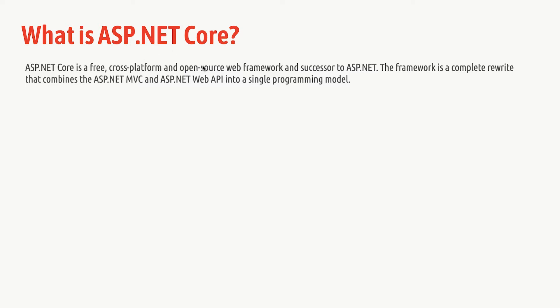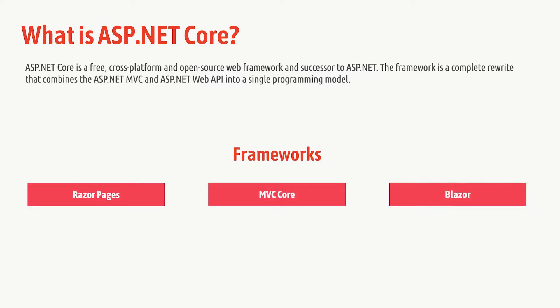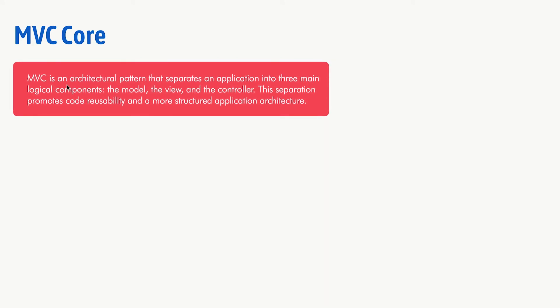These are huge differences. The framework is a complete rewrite that combines ASP.NET MVC and ASP.NET Web API into a single programming model. ASP.NET Core contains three main frameworks: MVC Core, Razor Pages — which is new — and Blazor. Let's take them one by one, starting with MVC Core.